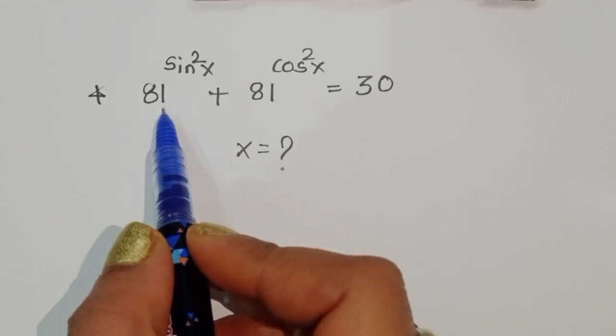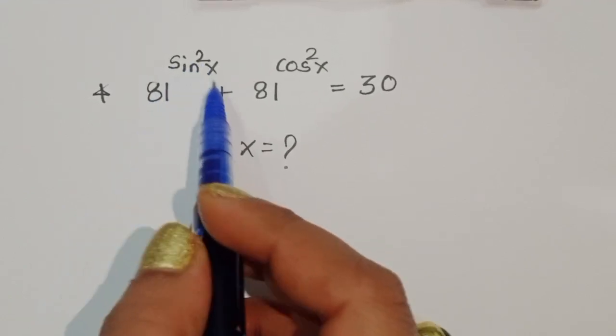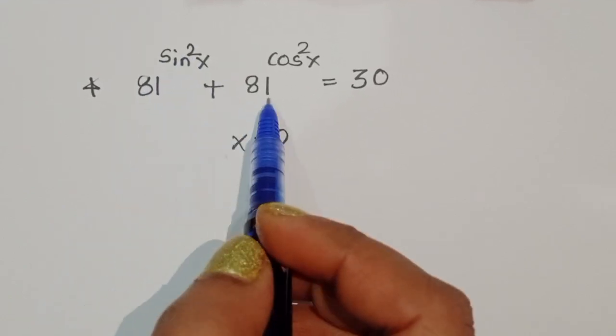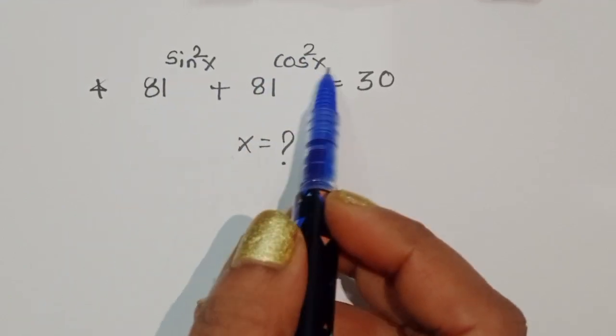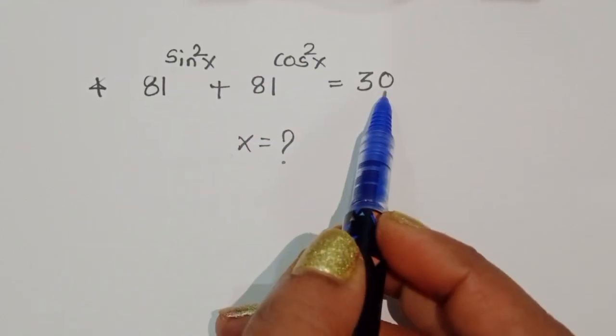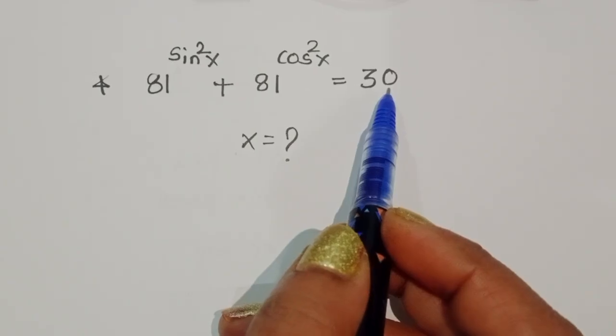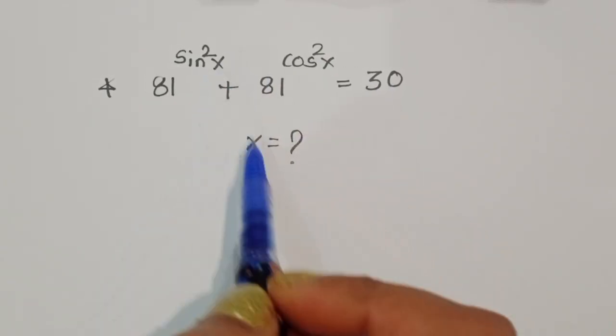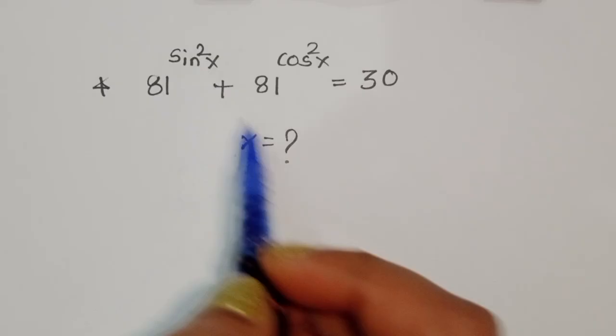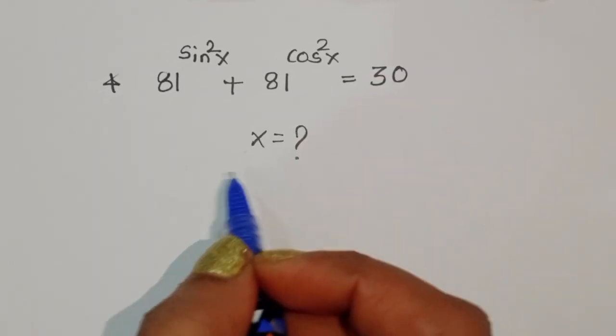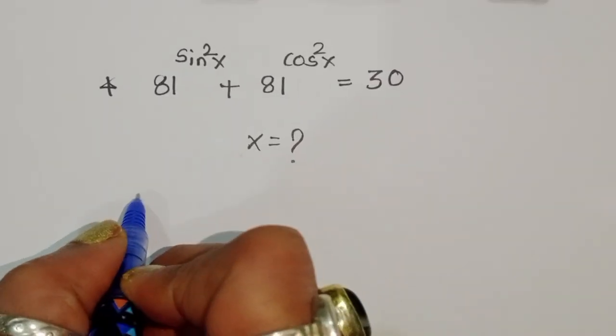We are given 81^(sin²x) + 81^(cos²x) = 30. We have to find out the value of x. Let's see the solution.